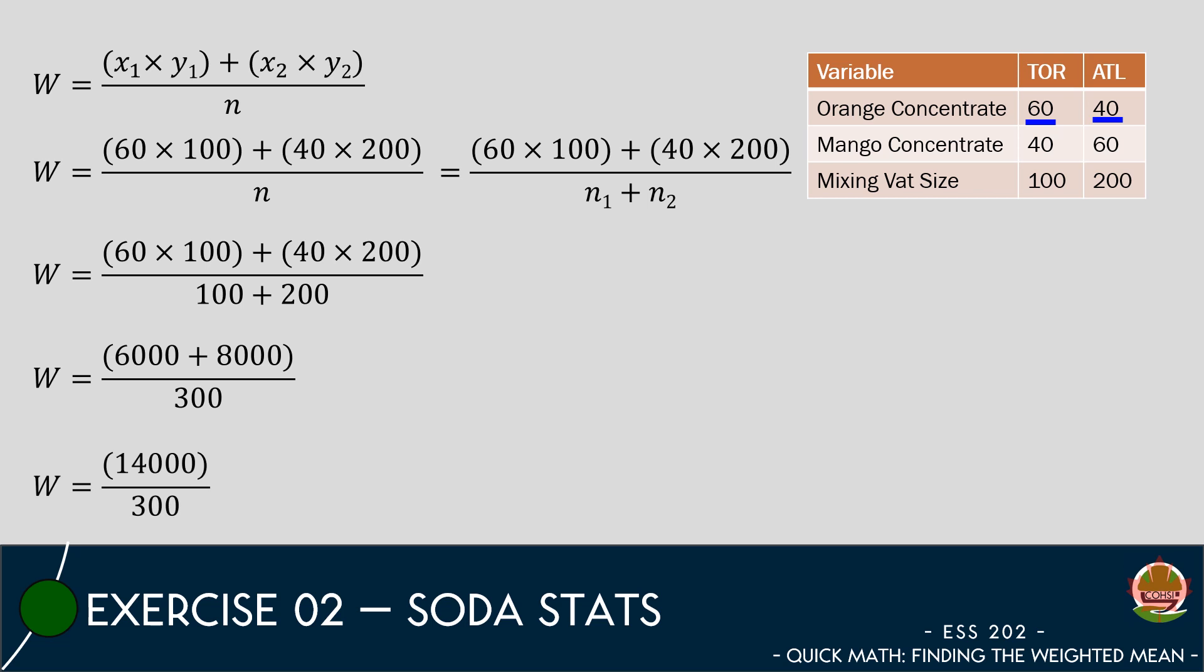Once we have done this, we will divide the combined amount of orange juice into the combined vat size to get a value of 46.67. This is the weighted mean of orange juice in both mixing tanks.